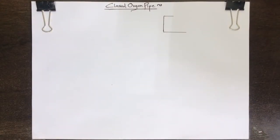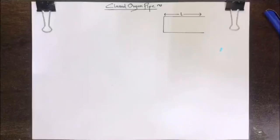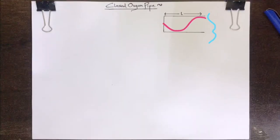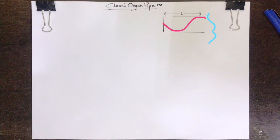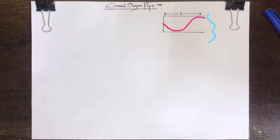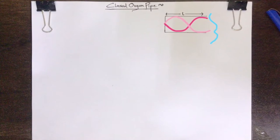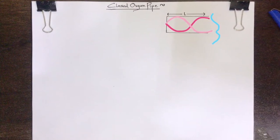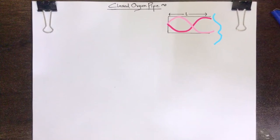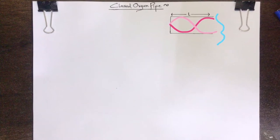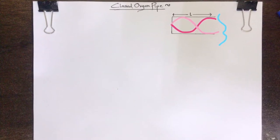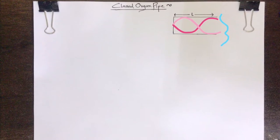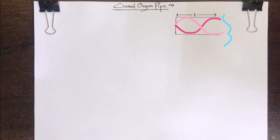Let us consider a closed organ pipe of length L lying along the X axis. When we blow air at its open end, a longitudinal wave travels in the air of the pipe towards the closed end, which reflects it back towards the open end. The incident and reflected waves traveling in the air column in opposite directions superpose and form stationary longitudinal waves.